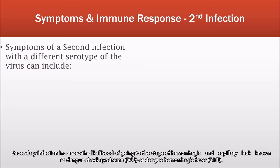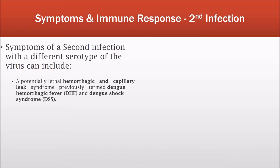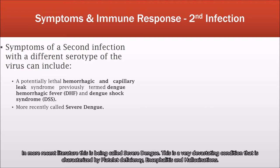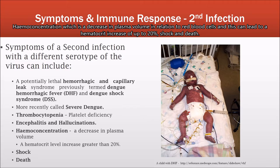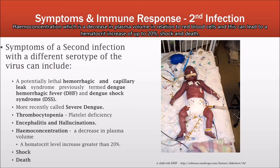Secondary infection increases the likelihood of entering the stage of hemorrhagic and capillary leak known as dengue shock syndrome or dengue hemorrhagic fever — referred to in more recent literature as severe dengue. This is a very devastating condition characterized by platelet deficiency, encephalitis and hallucination, hemoconcentration (a decrease in plasma volume in relation to red blood cells), which can lead to hemorrhagic increase of up to 20%, shock, and death.